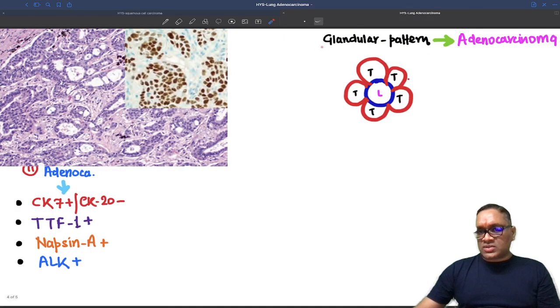Why is it called adenocarcinoma? Because they have glandular pattern. What do you mean by glandular pattern? There is a central lumen which is covered by tumor cells.